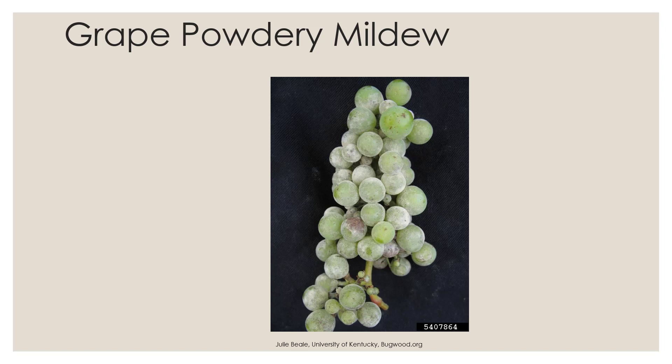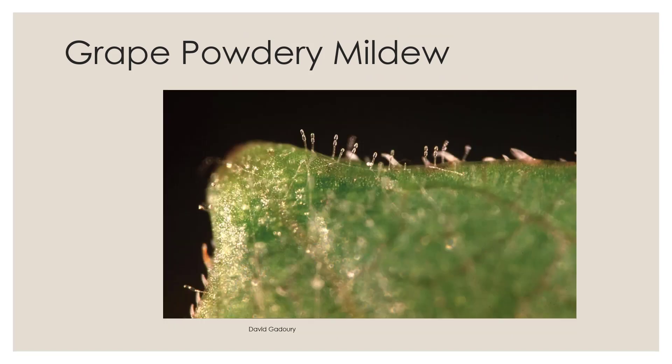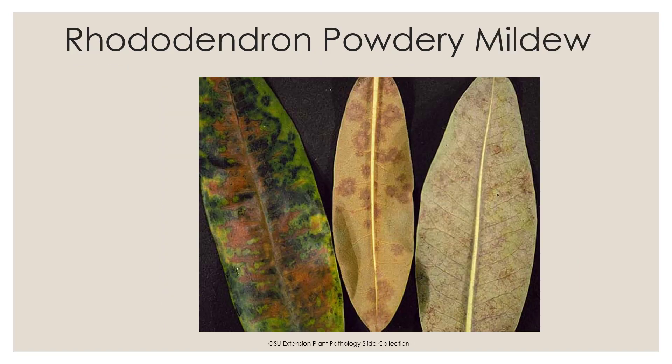Here's what it looks like on the leaf. Look closely — here are the upright threads and chains of spores under magnification. It's also very common on rhododendrons, and it looks quite different there than it does on many other plants.